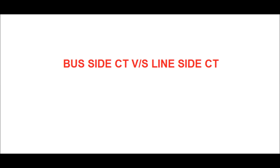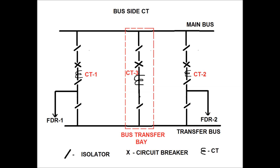Here, two feeders with one main bus, one transfer bus, and one bus transfer bay are shown in this diagram. After the main bus there exists a bus side main bus side isolator, and after that there is a circuit breaker. After the breaker we have CTs, and after the CTs we have a line side isolator. After the line side isolator the feeder — either overhead or cable — exists, and then we have a transfer bus side isolator. Since the CT is connected after the main bus side isolator, it is called bus side CT.